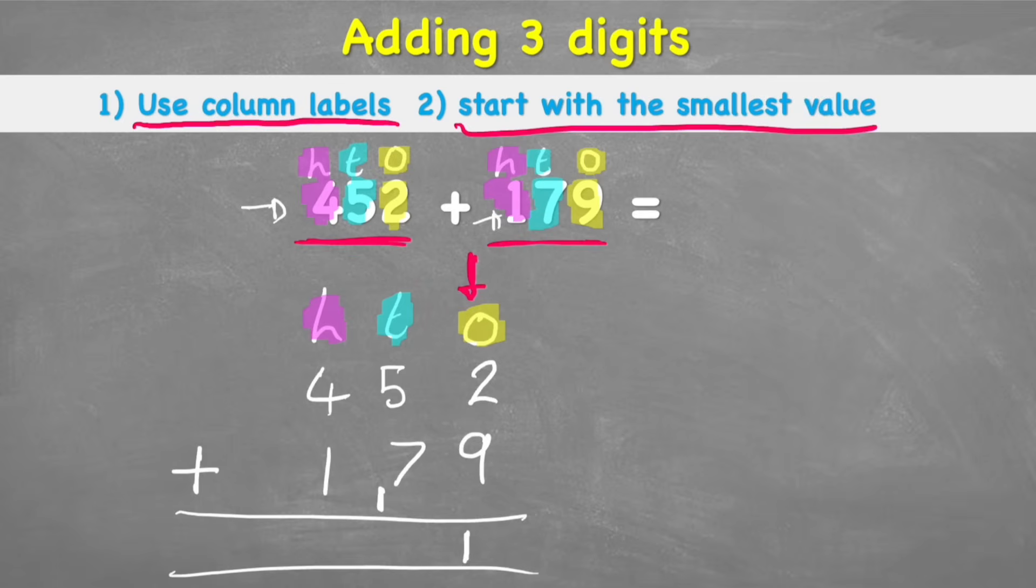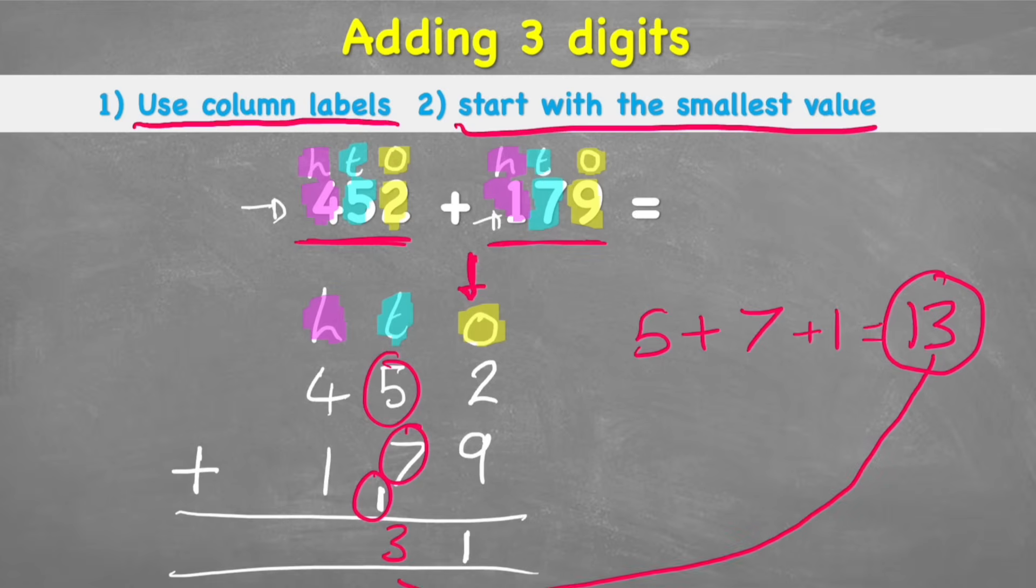Now I'm ready to solve my tens. And now I have a five plus seven plus this little one that we've just added. And that equals 13. And again, same problem. I have a two digit answer. So I'm just going to put my three, just like before, in this column. And then I put my one into the hundreds part of my question. Put that down here.